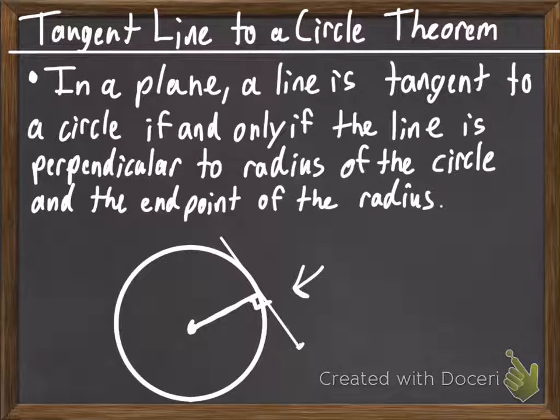and we see that there is a right angle that exists here. So, that's what that theorem says. It's only tangent if there's a right angle to the radius.